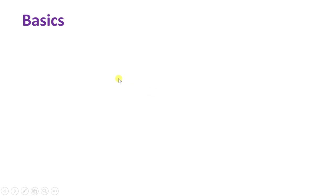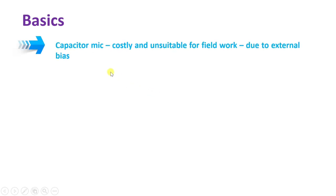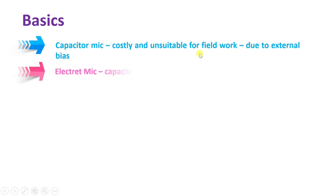When we talk about the electret microphone, it is a form of capacitor microphone. But as we have seen, the capacitor or condenser microphone was very costly and unsuitable for field use, due to the need for an external bias. In the electret microphone, it is even a capacitor microphone, but we don't need any external bias.